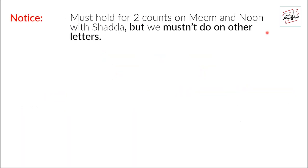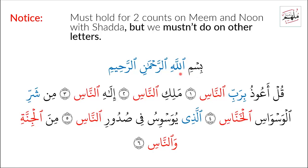Notice that we must hold for two counts on Mim and Nun with Shadda, but we must not do so on other letters. Let's apply: Bismillahirrahmanirrahim, Qul a'udhu bi rabbin naas. As you hear — on 'rabbi,' I don't hold for two counts, I just pronounce the Shadda normally. But I hold on 'al-naas.'